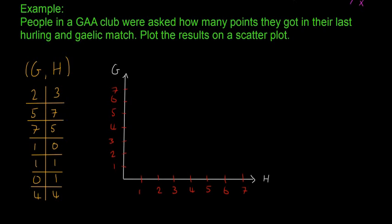If we're going to plot these you start with the first one, so we'll start with two, three. You go to two on the Gaelic axis and then go across to three on the hurling axis, which is about here, and you're going to draw your X. That's the point here and it's supposed to be at the intersection between two and three. It's not perfect because there's no graph paper but it'll do the job.